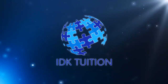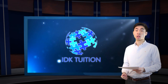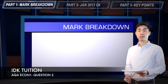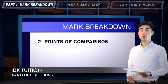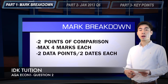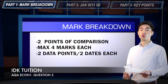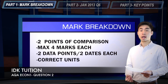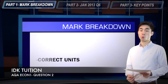Your second question on the AQA unit one paper is your eight-mark data question. This requires you to pick out two relevant points of comparison within the data, and for each point of comparison you need two data points and two supporting dates. So essentially if you don't have four dates and four data points in your final answer, you're not going to get full marks. The last thing to remember is that your units of measurement also need to be correct — if they're not, you're going to get marks taken away.